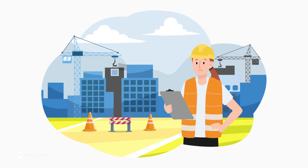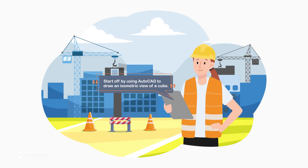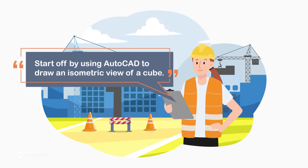A simpler and clearer set of instructions would be: 'Start off by using AutoCAD to draw an isometric view of a cube.' Now you know what you're supposed to be working with, and the instructions are easier to understand. Do you get the picture?